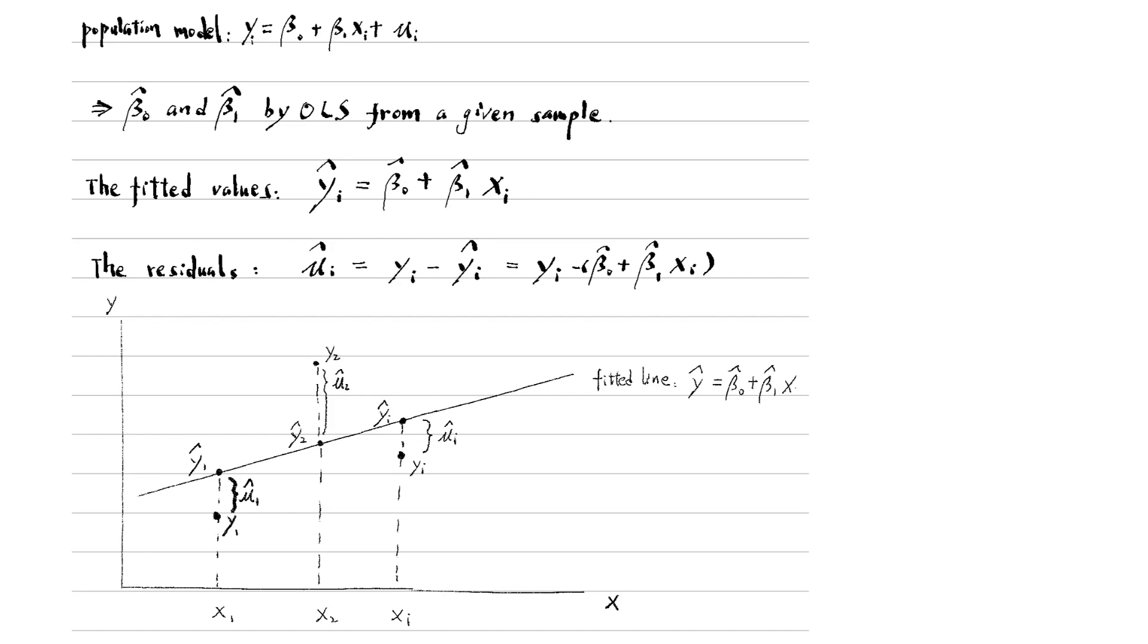and yi are the actual values of y in the sample we observed. While y1 hat, y2 hat, yi hat are the fitted values we predict using the OLS estimates beta1 hat and beta0 hat and observed values of x.